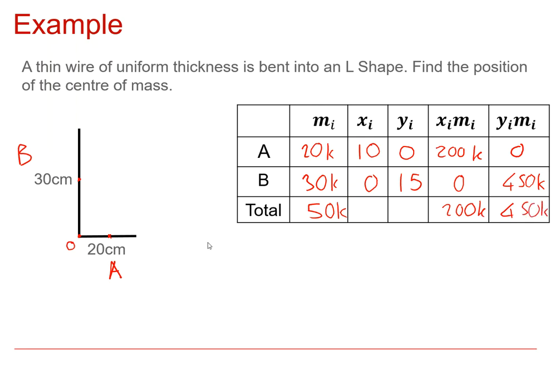And then we do our standard calculation now for the centre of mass in the x-direction. So it's the sum of the individual x-values times the masses, which is 200k, over the total mass, which is 50k. So the k's cancel. 200 over 50 is 4. So the x-coordinate of the centre of mass is 4.